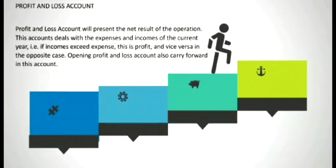After recording the income and expenditure, profit or loss is to be ascertained under the profit and loss account. The profit and loss account will present the net result of operations. This account deals with expenses and income of the current year — if income exceeds expense, it is profit, and if expense exceeds income, it is loss.